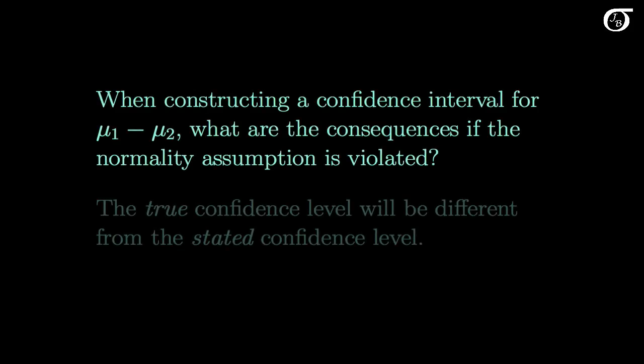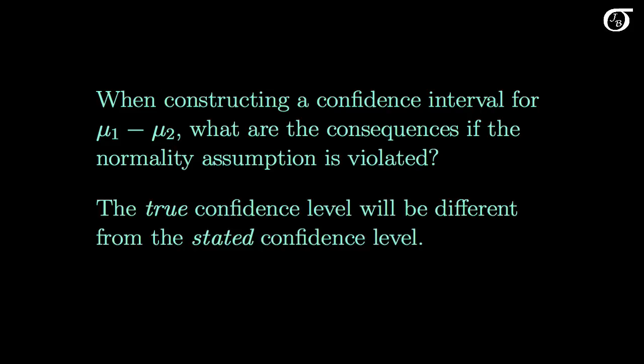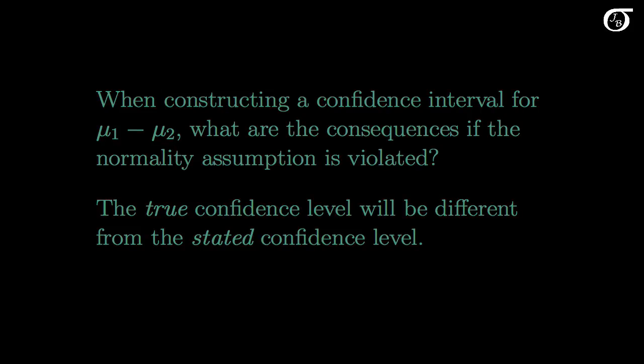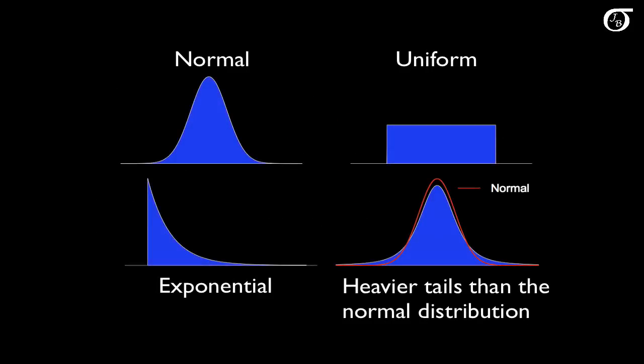When constructing a confidence interval for mu1 minus mu2, what are the consequences if the normality assumption is violated? The short version is that the true confidence level will differ from the stated confidence level. We might be stating a 95% confidence interval, but that interval method might only capture the true difference in means a much lower percentage of the time, like 91% or 89%. Similarly, if carrying out a hypothesis test and the normality assumption is violated, the true significance level would differ from the stated significance level.